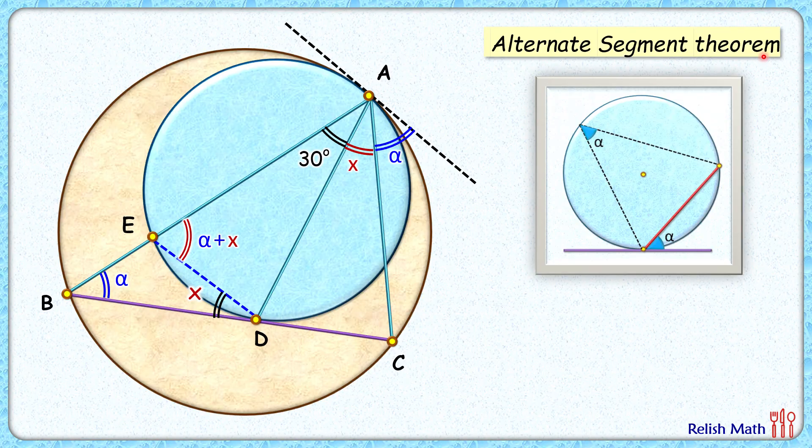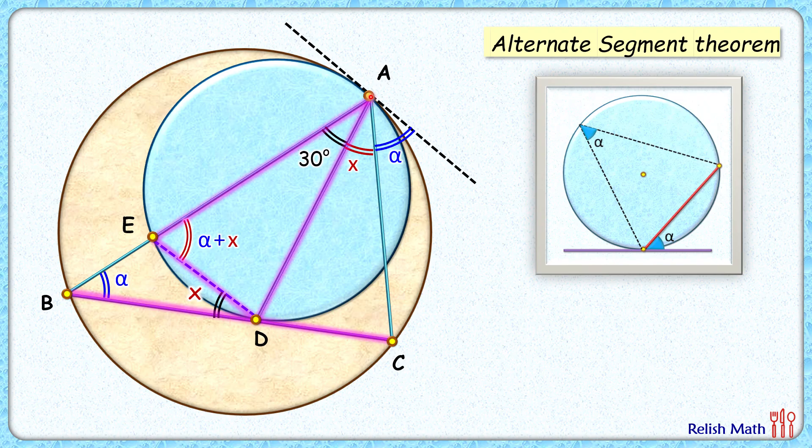So we'll be using the same alternate segment theorem for the third time. We have got, with respect to the blue circle, BC is the tangent, ED is the chord, and the angle made by them is x degrees. And by the theorem, this chord ED will subtend the same angle in the remaining part of the segment, that is x equals 30 degrees.